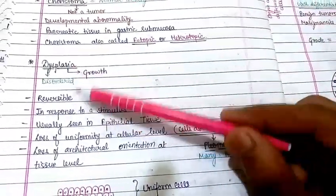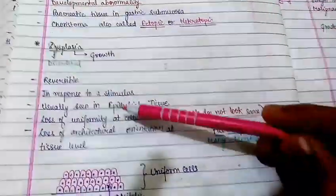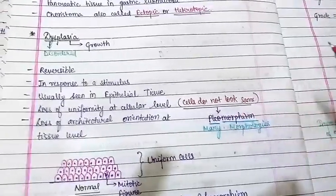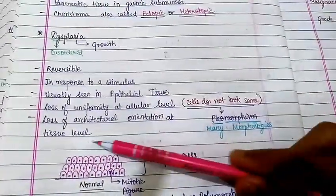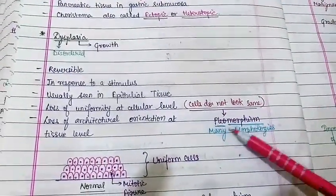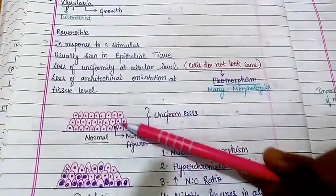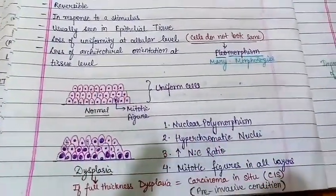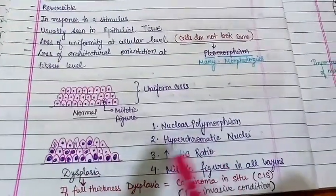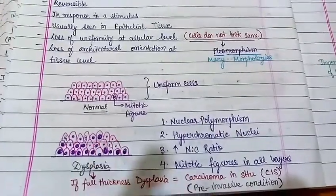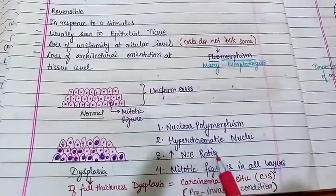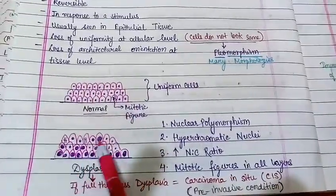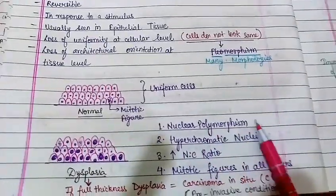Dysplasia — 'dys' means disorder, 'plasia' means growth — is reversible, appearing in response to a stimulus. It is usually observed in epithelial tissue. In dysplasia, loss of uniformity at the cellular level occurs (cells do not look the same) and there is loss of architecture/orientation at the tissue level. Cells show nuclear polymorphism, hyperchromatic nuclei, increased nuclear-to-cytoplasmic ratio, and mitotic figures in all layers (normally only in the basal layer).